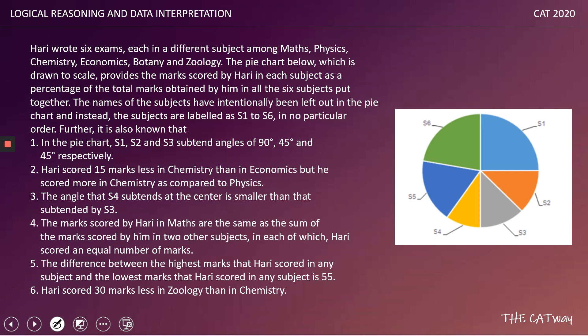The question says that Harri wrote six exams, each in a different subject — maths, physics, chemistry, economics, botany, and zoology. The pie chart below, drawn to scale, provides the marks scored by Harri in each subject as a percentage of total marks. The subject names have intentionally been left out and instead subjects are labeled S1 to S6 in no particular order.